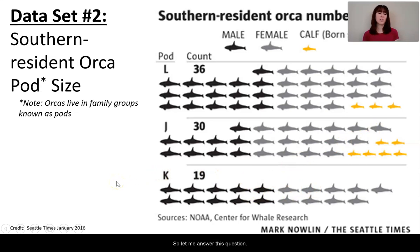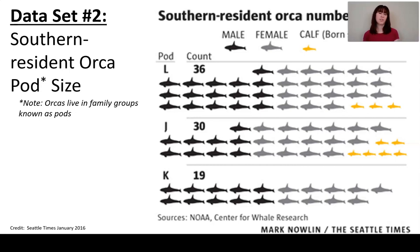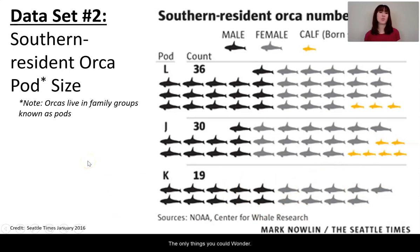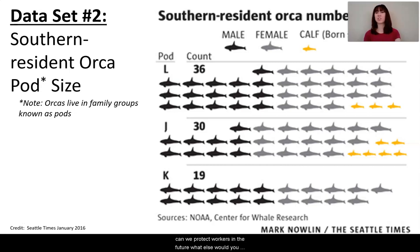Let's answer those questions. Number one: how is the data being presented? I would say this is an infographic — think about how it presents information. Number two: summarize the data in your own words, as if explaining it to a friend who can't see it. Number three: what questions do you have about the data? You might wonder, for example, why doesn't K-Pod have any calves? There are so many things you could wonder. Number four: what other information would help you answer the unit questions — why has the orca population declined in Puget Sound, and how can we protect orcas in the future? Please pause the video and take a few minutes to make your notes.